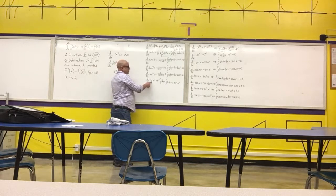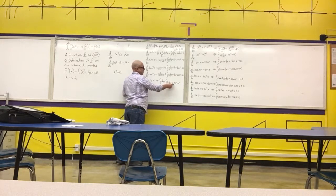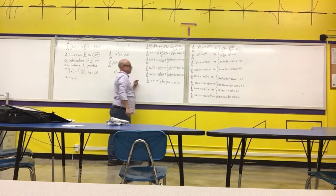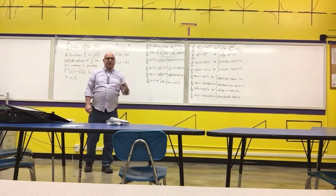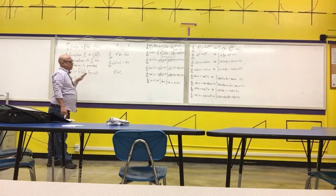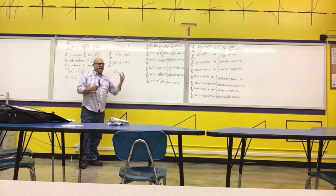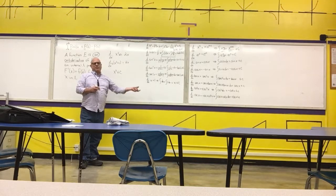The last one: the derivative of x with respect to x is one, therefore the antiderivative of dx — which can be written as the antiderivative of one dx — is x plus C. We also have our same rules from the definite integral: the integral of a sum is the sum of the integrals, and we can pull constants through the integral symbol — a constant times the integral of a function equals the integral of the constant times the function.